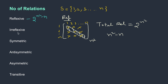Irreflexive says that diagonal elements should not be there, and all other elements you can pick up whichever you want. So you should not pick up the diagonal elements but can pick up any other element — which gives the same count. Irreflexive is also 2 to the power of n squared minus n.